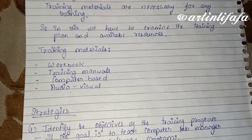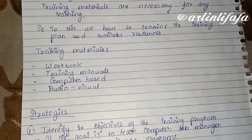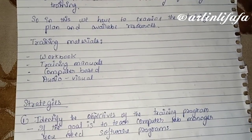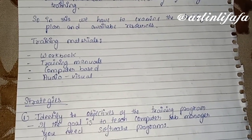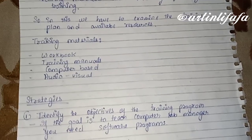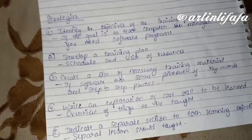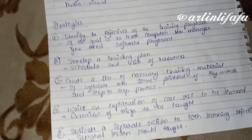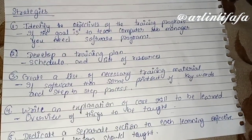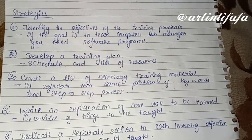Training manuals — कैसे-कैसे सारी चीज़ें manage होंगी। Computer-based training — अगर हम computer-based training दे रहे हैं। Audio-visual — अगर कोई presentation या audio सुना रहे हैं। यह सारी चीज़ें available होनी चाहिए। Developing training plan के लिए strategies: सबसे पहले identify the objective of the training program।